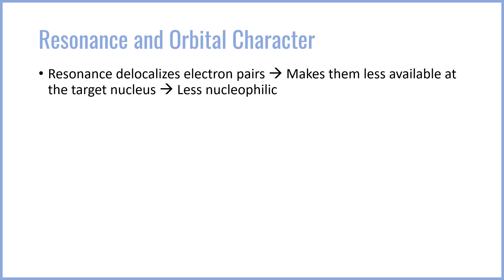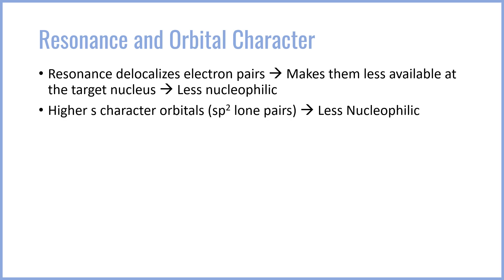Another major factor which impacts nucleophilic strength is resonance effects and orbital character. Resonance delocalizes electron pairs, making them less available at the target nucleus — lone pair availability is a major factor in nucleophilicity, and the lone pair has to directly transfer from nucleophile to electrophile. If it's delocalized, or smeared over the entire molecule, it will be much less nucleophilic. Similarly, an orbital with higher s-character — such as sp2 lone pairs — is going to be less nucleophilic, because sp2 orbitals hold the lone pair more tightly and closer to the nucleus.